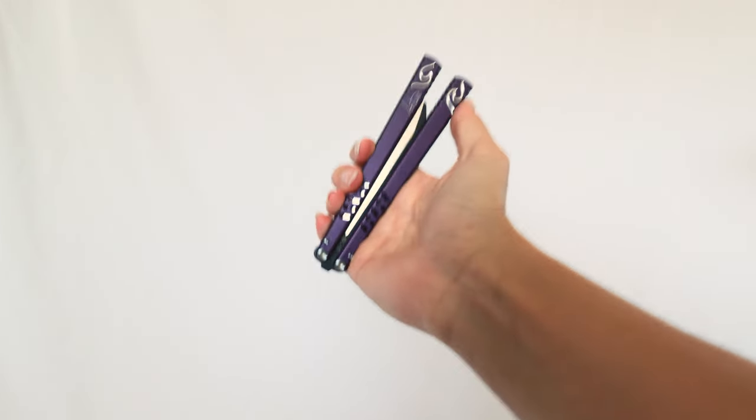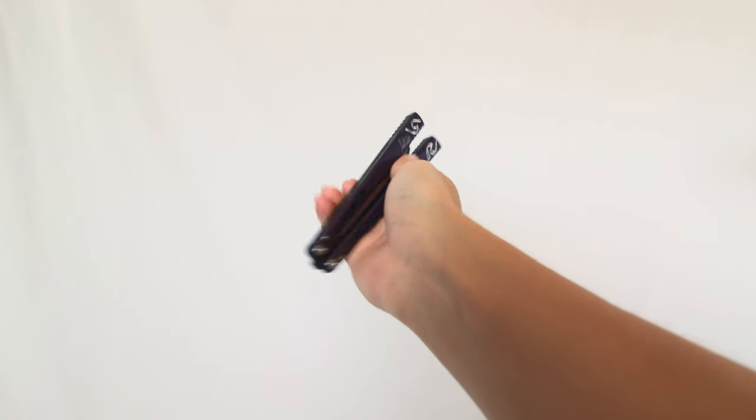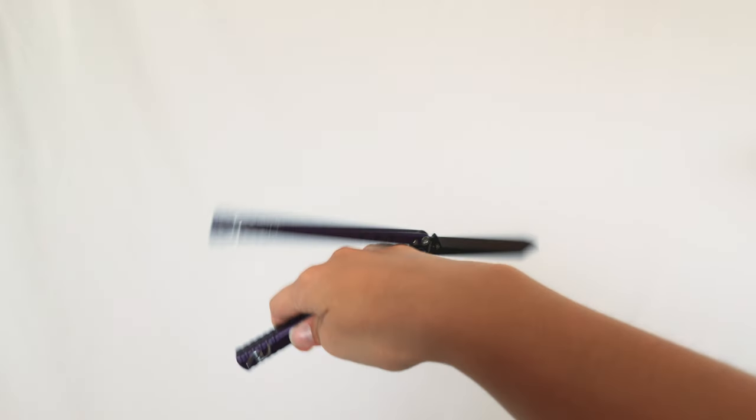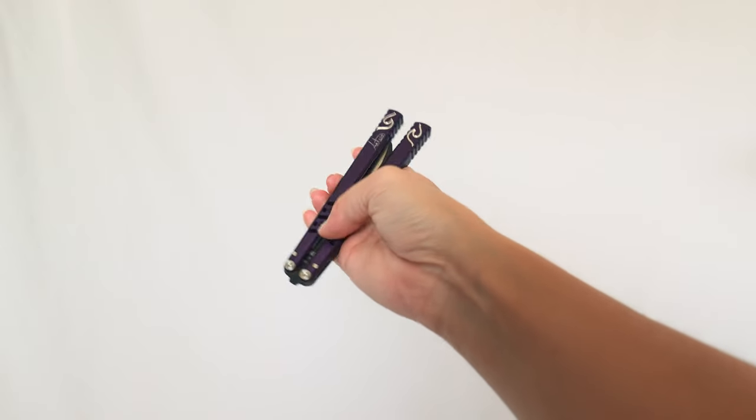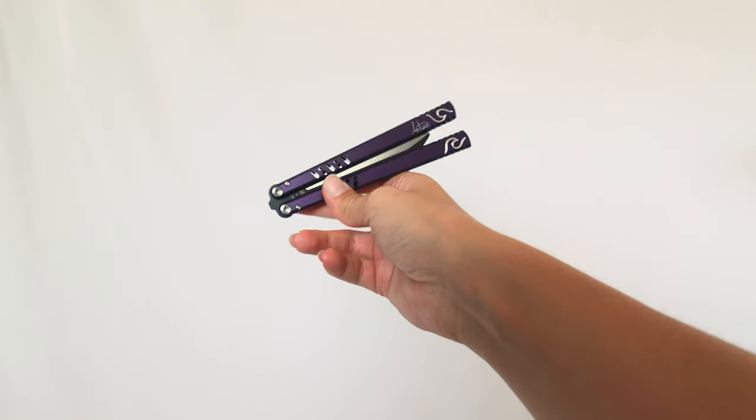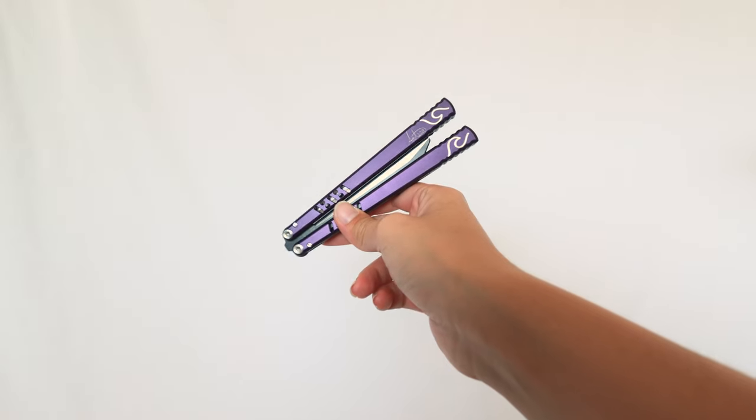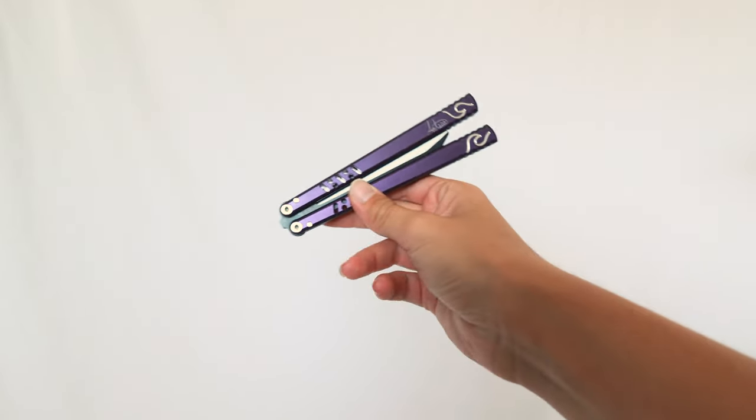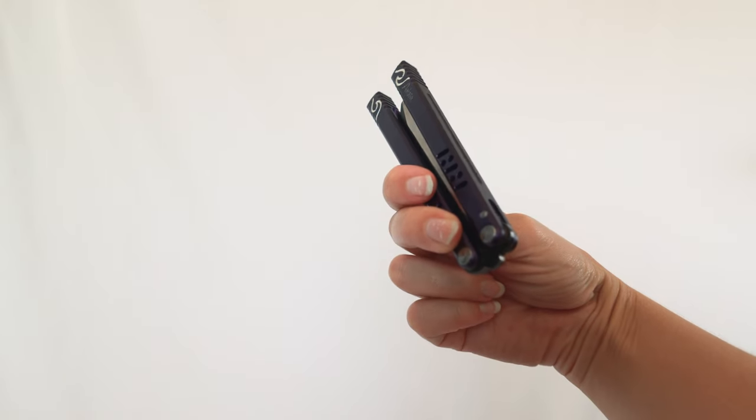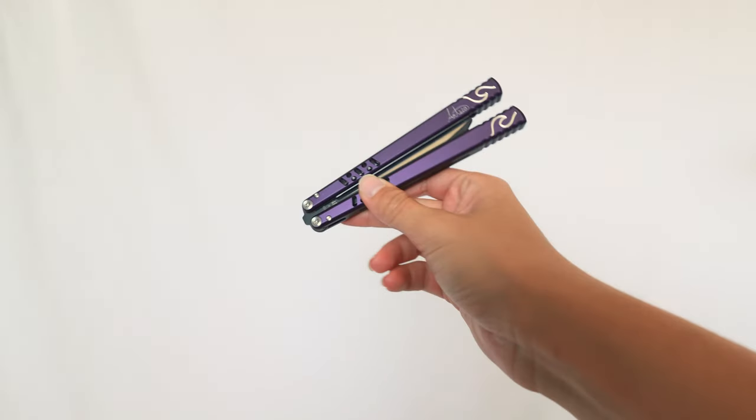When I first started trying to learn this, I was doing a full grip, this weird grip when trying to throw the knife in the air. And I found out that it's a lot easier and you have a lot more control if you have your fingers like this. So your thumb on the front of the safe handle and your middle finger and index finger on the back.